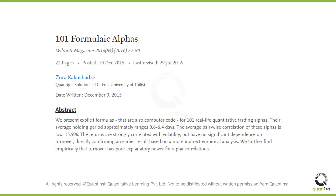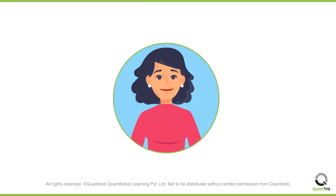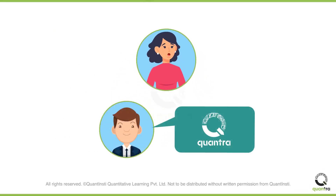In 2015, Kaku Shadze published a paper with the title '101 Formulaic Alphas', which details a wide range of alpha ideas. For a novice, the ideas in this paper may seem quite hard to grasp, but with the experience gathered throughout this course, you can already test most of what is detailed there.